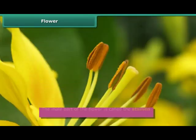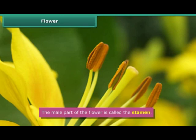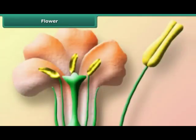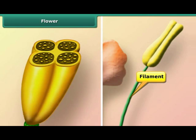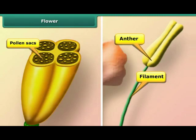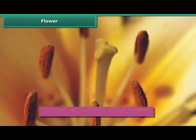The male part of the flower comprises one or more stamens. Each stamen is a stalked structure. The stalk is called the filament. Atop the filament are two sacs containing pollen. These sacs are known as anthers.